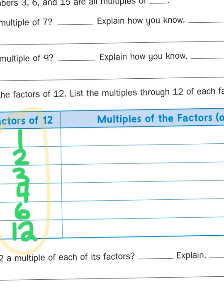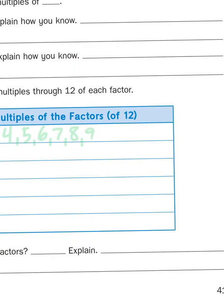So, if I'm skip counting by 1s, it's 1, 2, 3, 4, 5, you get it. I'm just counting by 1s, until I get to 12.